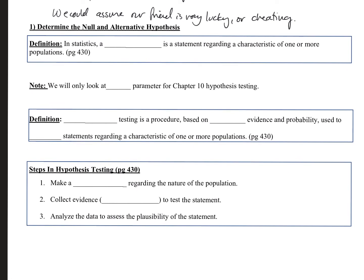Now let's look at the null and alternative hypothesis. By definition, a hypothesis is a statement regarding a characteristic of one or more populations. In chapter 10, we'll only be looking at one parameter for hypothesis testing. Hypothesis testing is a procedure based on sample evidence and probability, used to test statements regarding a characteristic of one or more populations — similar to what we did with the coin question.